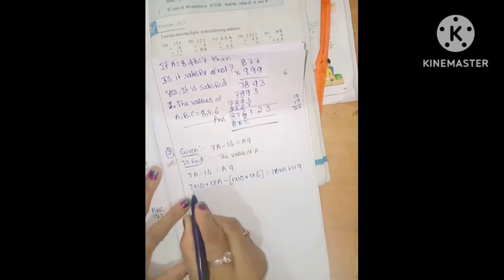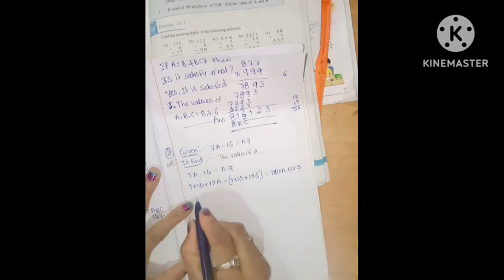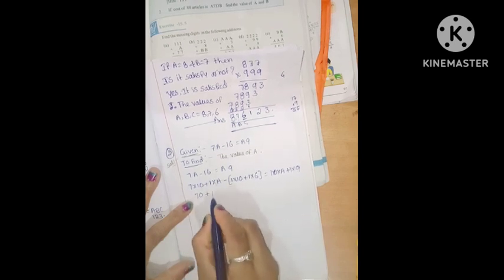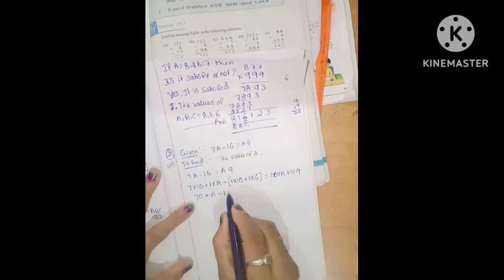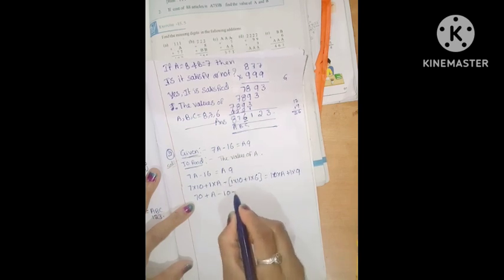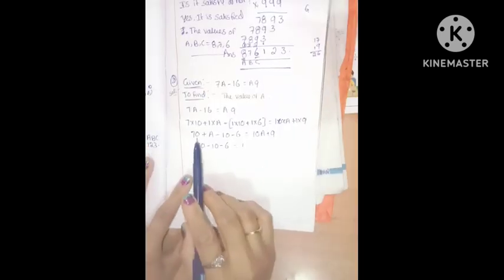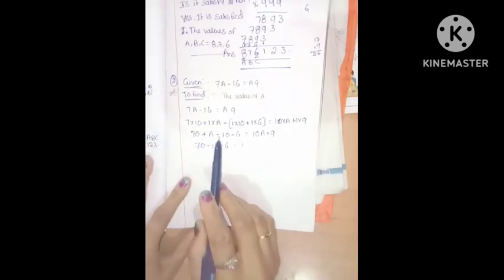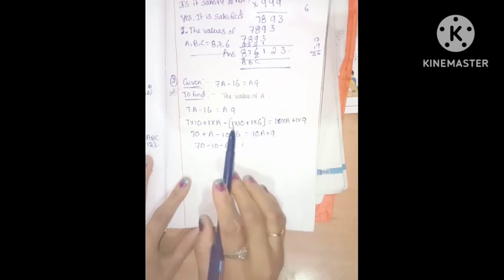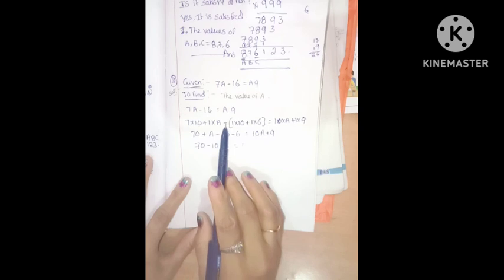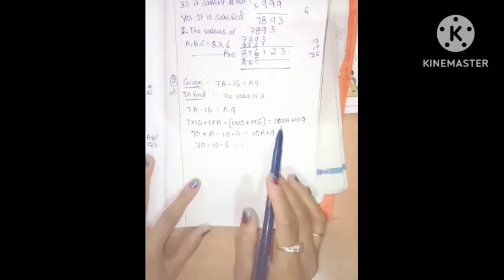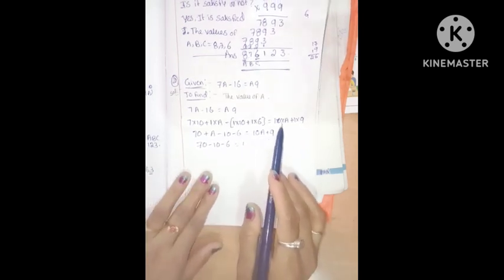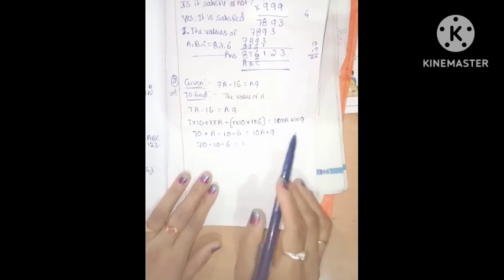Very easy, Gagansha. 7 into 10 is 70, plus 1 into A is A. Removing the brackets: 1 into 10 is 10, minus into plus gives minus. Minus, 1 into 6. So we have 70 plus A, minus 10, minus 6, equal to 10A plus 9 on the RHS.